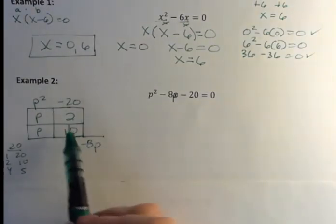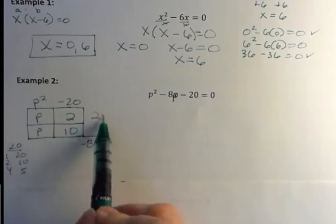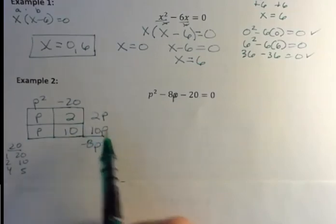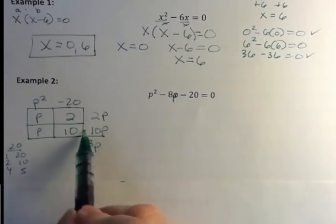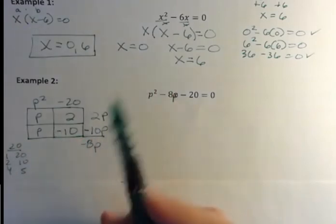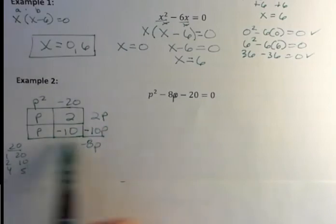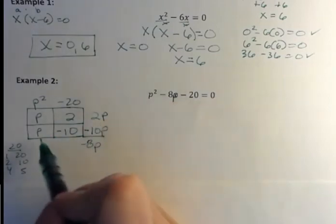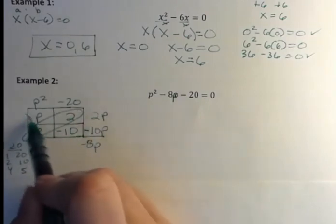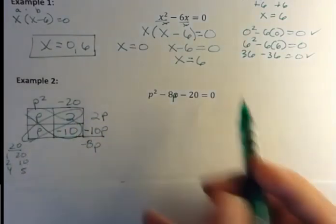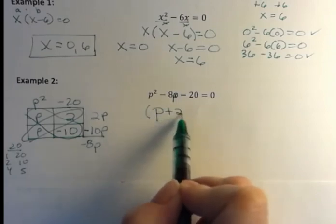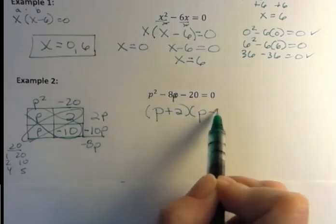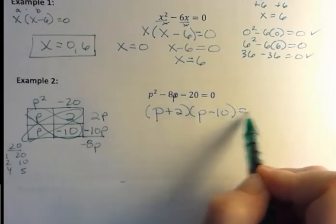Now I want to multiply across. I get 2p and 10p, and then I ask myself which one of those needs to be negative. Well, I want more negatives. So I want the 10 to be negative. And if I check that, I get 2p and negative 10p, which adds up to negative 8p. So I have factored this now. My factorization, remember, is on the diagonal. It doesn't matter which one you put first. P plus 2 and p minus 10 equals 0.